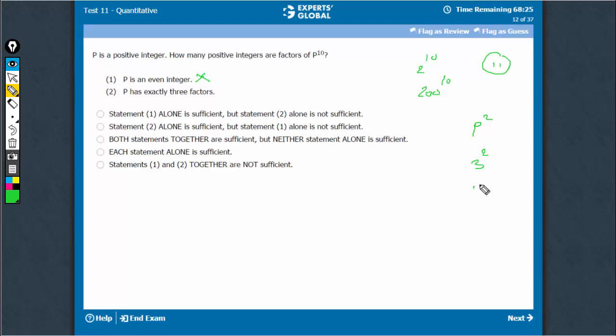So, the factors would be 3 raised to power 1, 3 raised to power 2, and 3 raised to power 0, which is 1. So, that's the only way a number can have three factors.